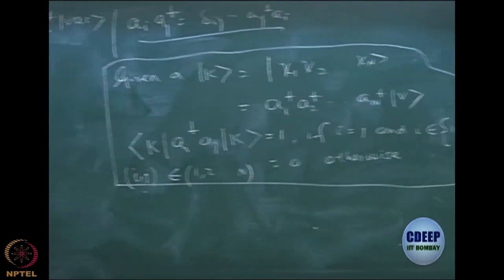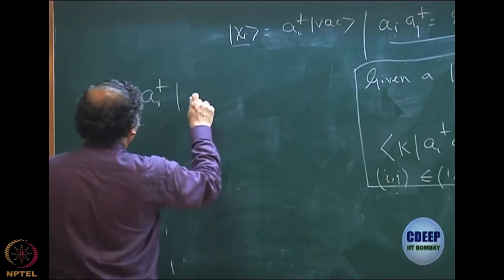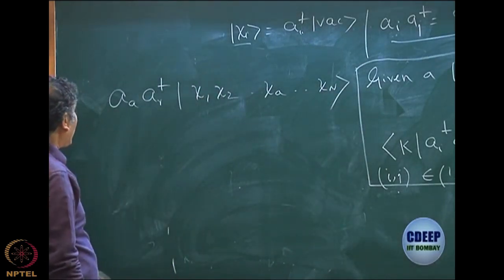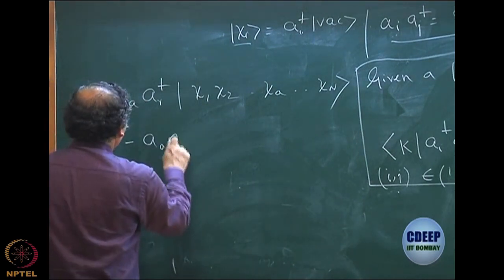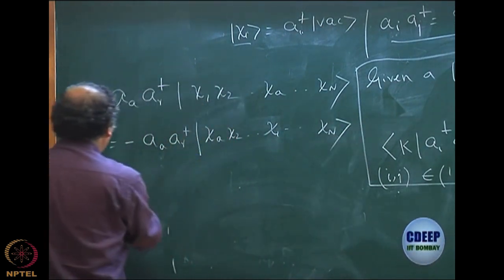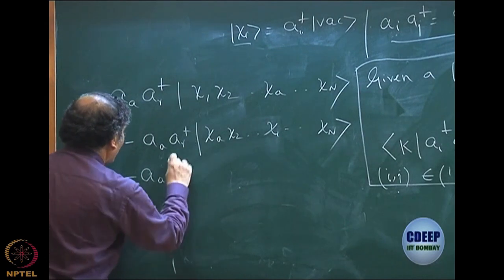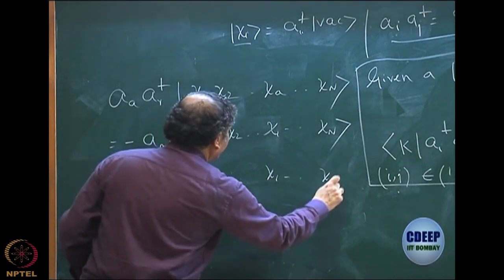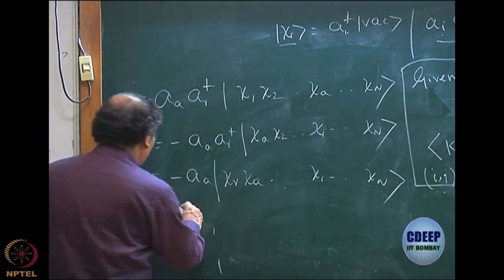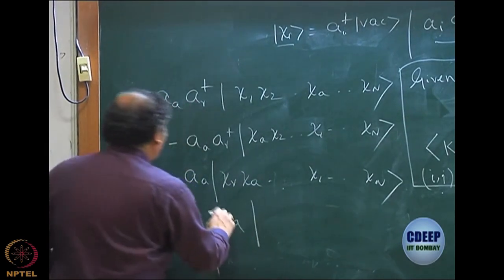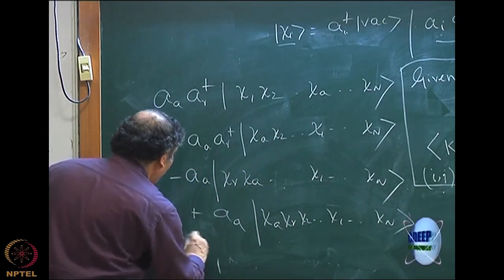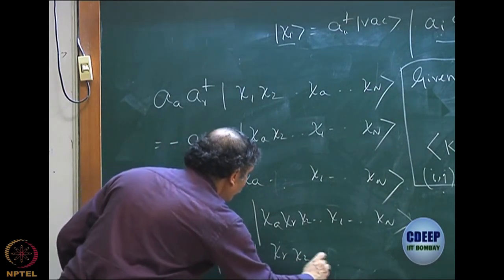Let us do it the other way: A_A A_R-dagger acting on the determinant chi-1, chi-2, somewhere chi-A, chi-N. I first bring chi-A to the front: minus A_A A_R-dagger, chi-A, chi-2, chi-1, chi-N. Then I create, so chi-R comes here: minus A_A, chi-R, chi-A, chi-1, chi-N. Now I have to annihilate, so I do one more switch: plus A, chi-A comes first, then chi-R, chi-2, chi-1, chi-N. Now I annihilate chi-A, getting plus chi-R, chi-2, chi-1, chi-N.